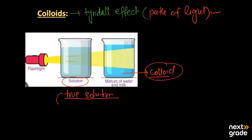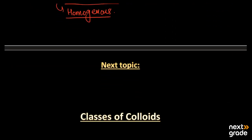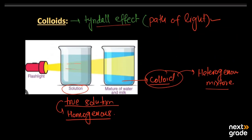When the path of light is not visible, it means we have a true solution. A true solution is one which is homogeneous, not heterogeneous. On the other hand, a colloid is a heterogeneous mixture and that heterogeneous mixture can show the Tyndall effect.